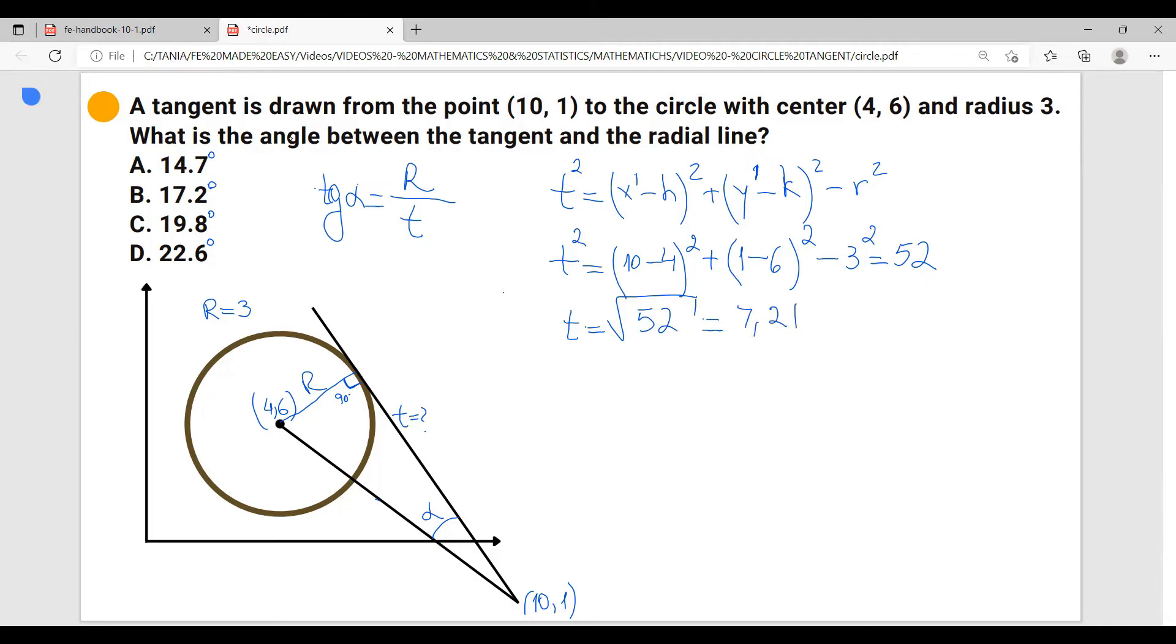All right, so now we know the tangent, we can go back to the initial formula we wrote and calculate the angle alpha. So tangent alpha equals to the radius which is 3 over the tangent which is 7.21. So we have 3 divided by 7.21, get 0.416.